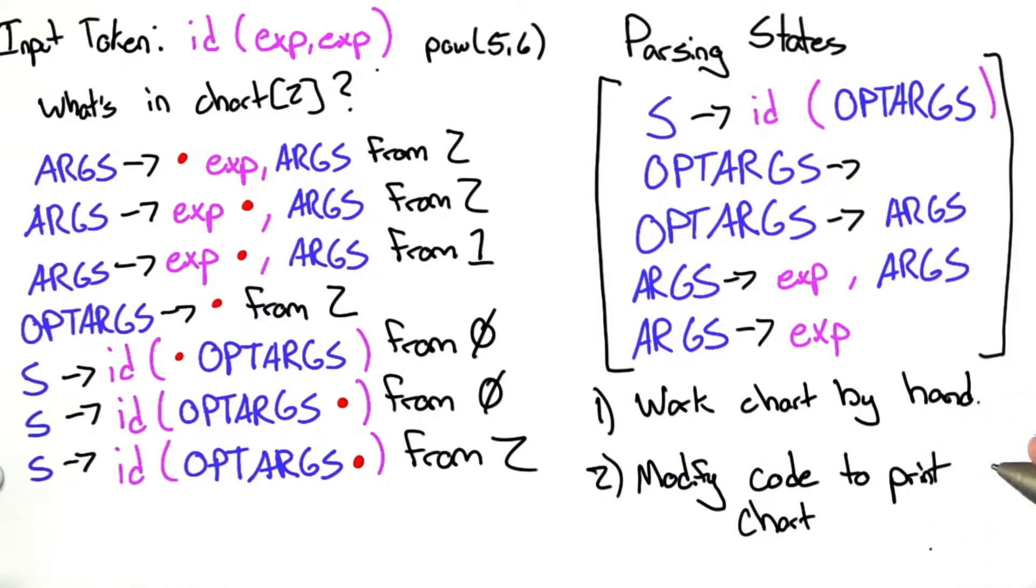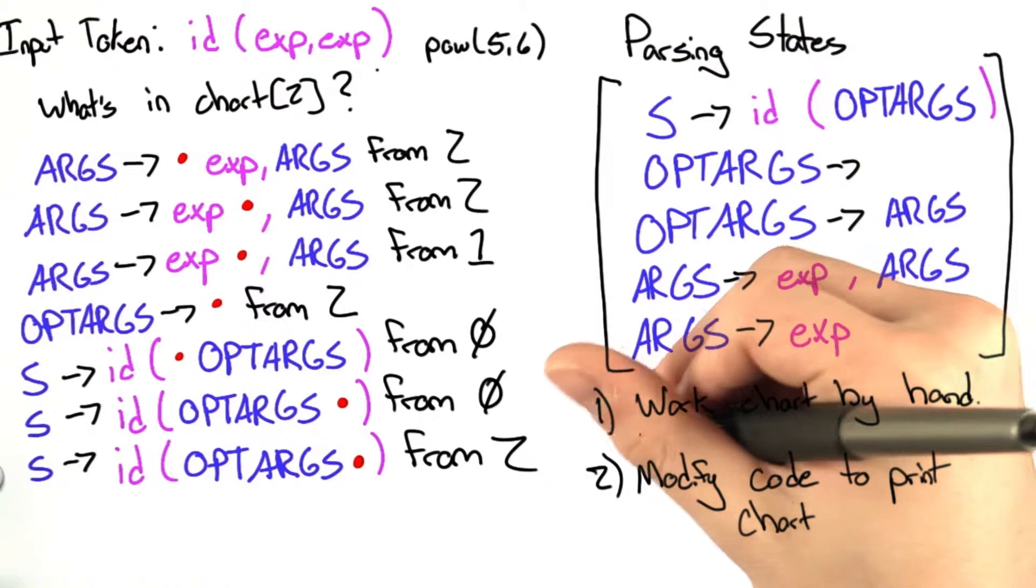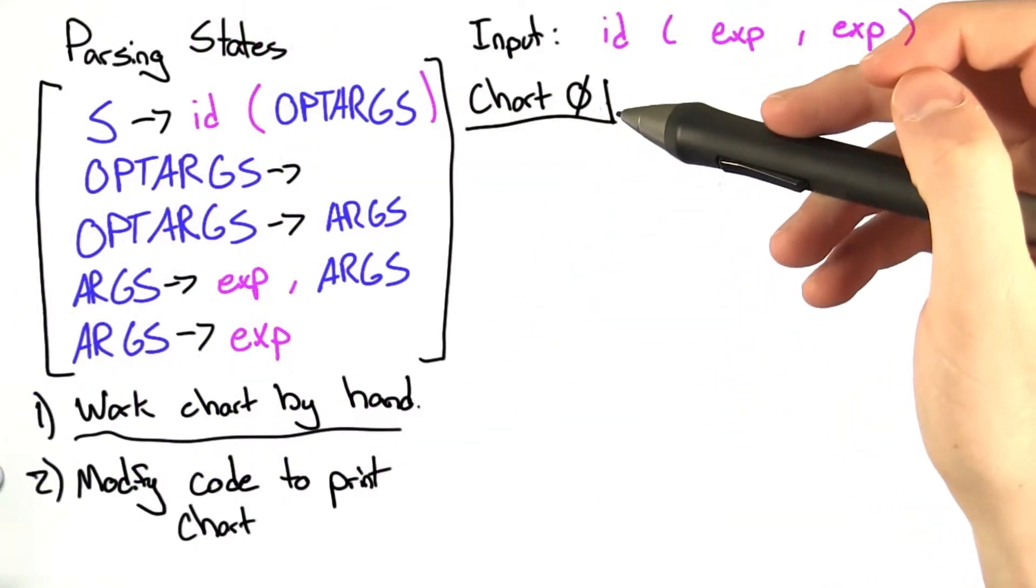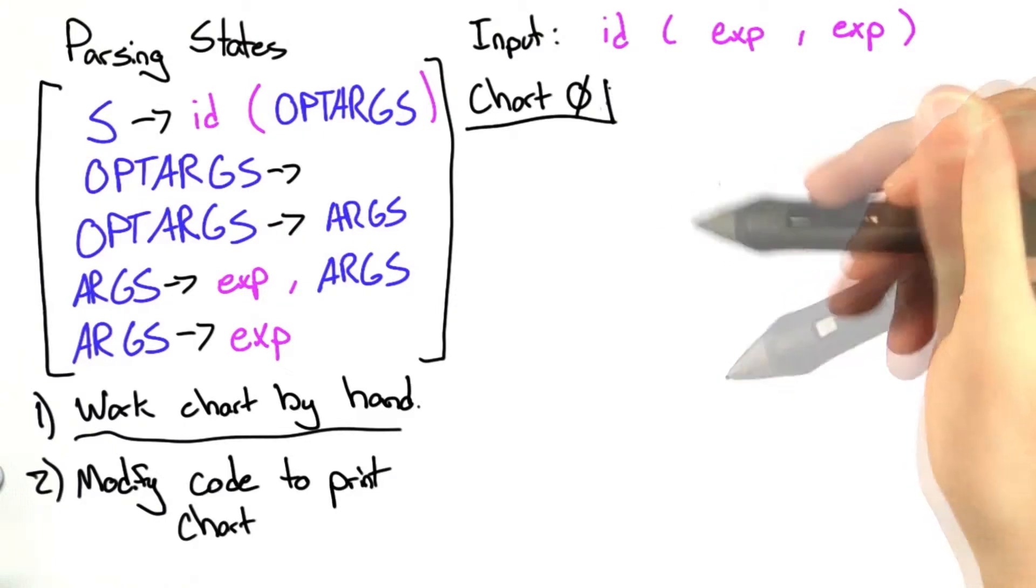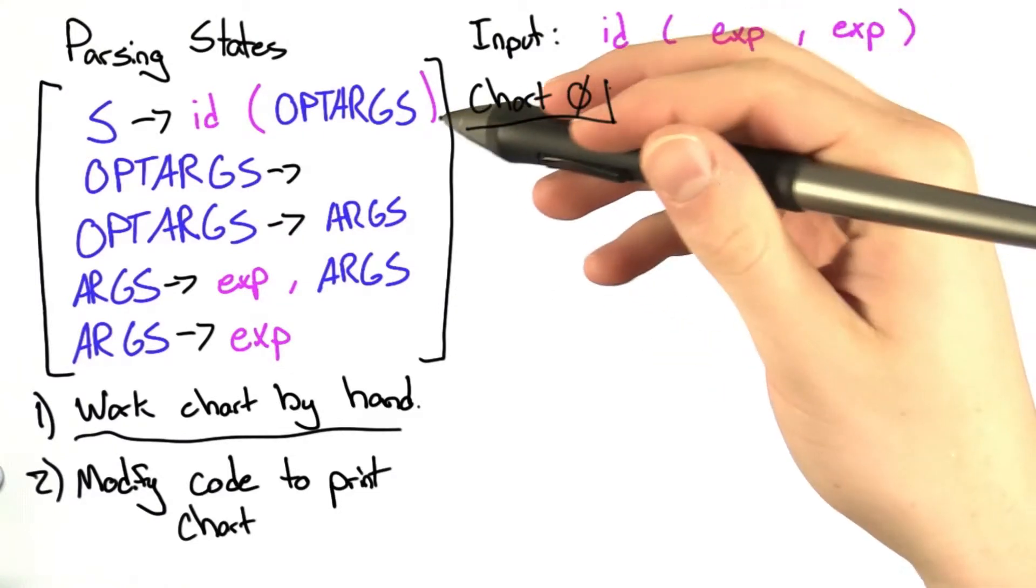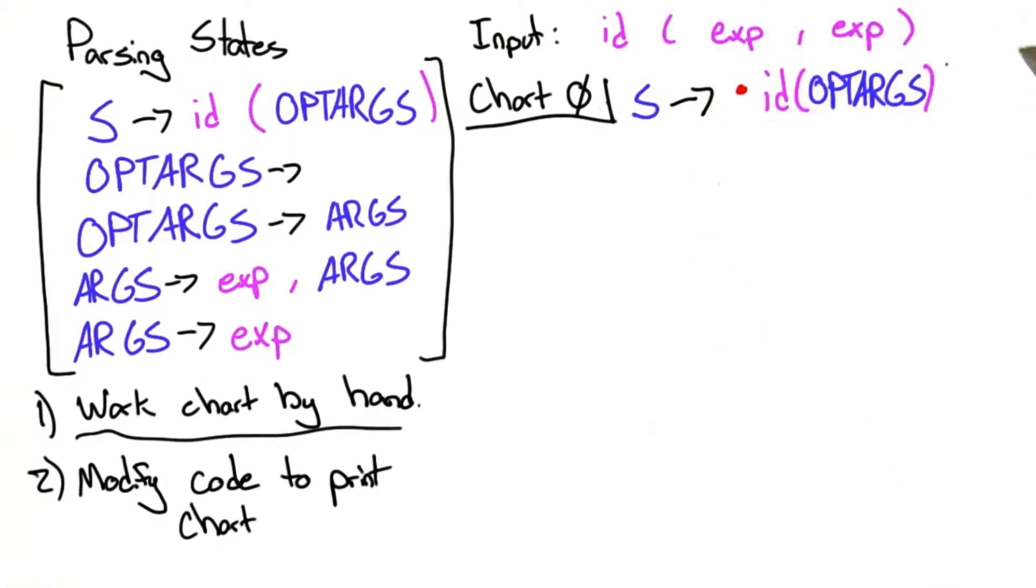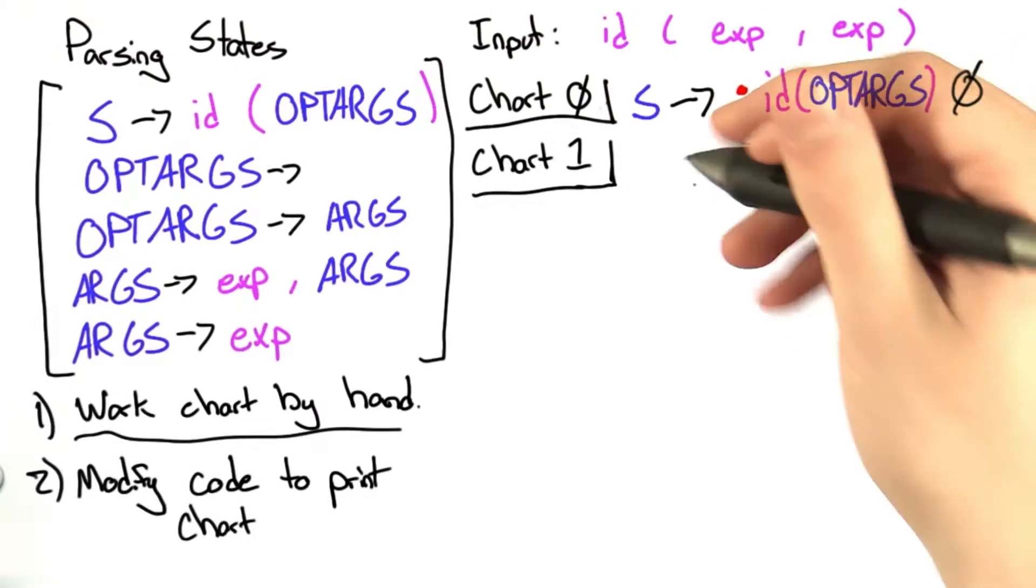This is probably what you want to do if you were asked this question more than once. But for the sake of going over the answer, we're going to work it out by hand. Here's our input. Here's our grammar. We want to know what's in chart 0. We haven't read anything in yet, so we're just going to be at the beginning of the start substitution rule. We introduced this in chart state 0.